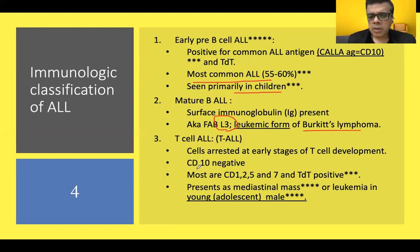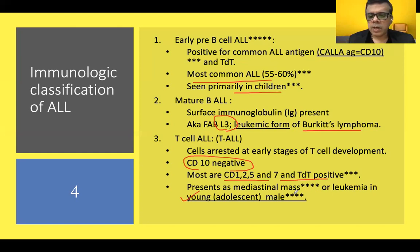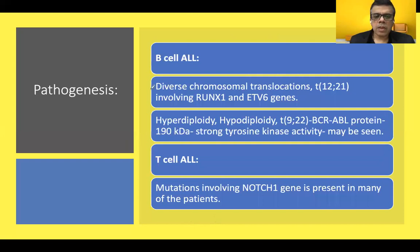In T cell ALL, CD1, CD2, CD5, CD7, and TdT are positive, while the CALLA antigen or CD10 is negative. An important exam point: T-ALL presents as a mediastinal mass or leukemia in a young adolescent male. The leukemic cells can disseminate in peripheral blood or infiltrate various other tissues.